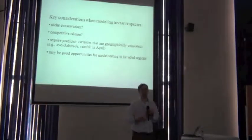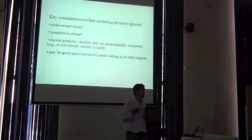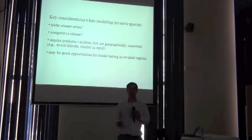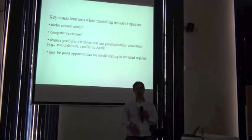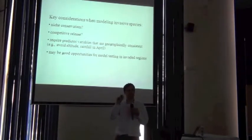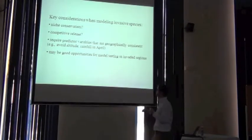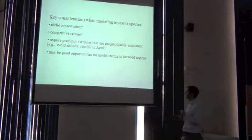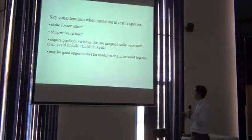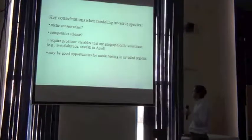So your model in one region of the world might say, well, the species likes an altitude in a range of six to eight hundred meters. But in another part of the world, the altitude in a range might be very, very different, because it's not really the altitude it's responding to, it's the environment, for example, temperature. So altitude would be a good example of a predictor variable that we kind of should never really use, because it's not geographically consistent.